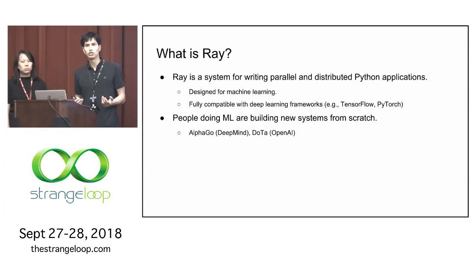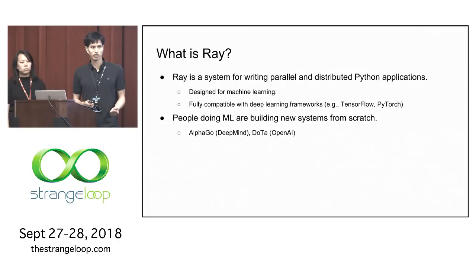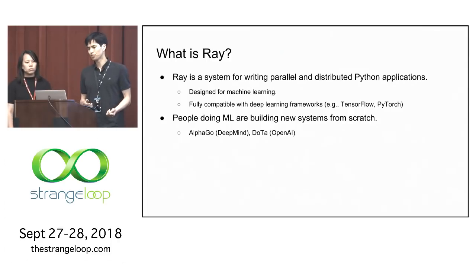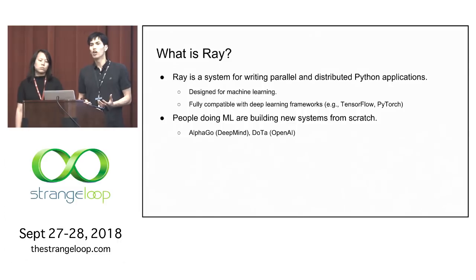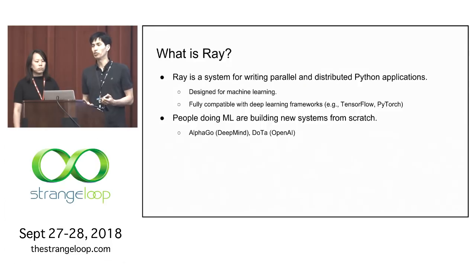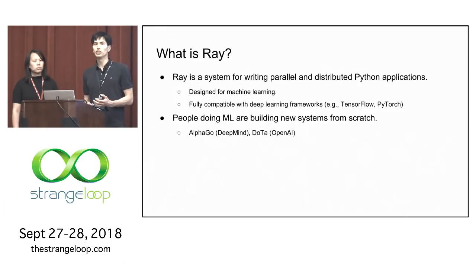Ray is an open source system for writing parallel and distributed Python applications, and it's specifically designed to support machine learning workloads. Distributed computing comes up all over the place in machine learning, and these new workloads are pushing the limits of existing systems so much so that machine learning researchers and practitioners are not using existing standard distributed systems.